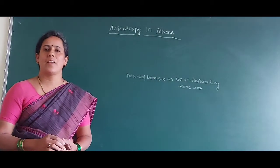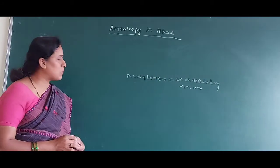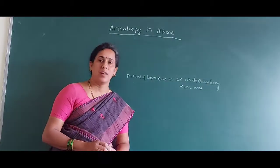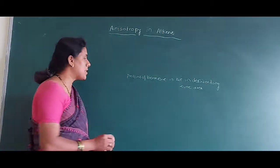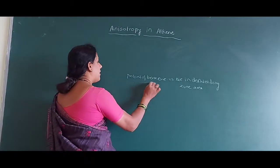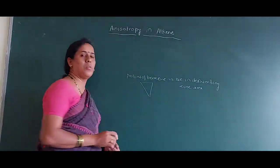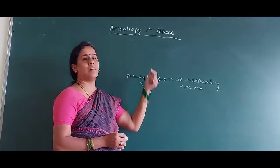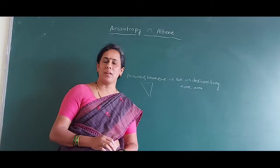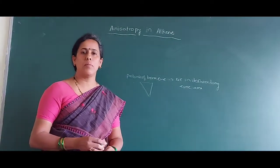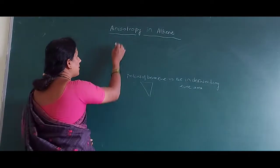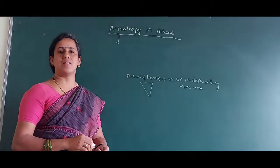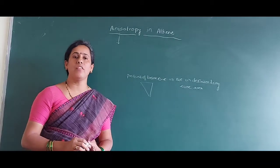There are two zones: the shielding zone and the deshielding zone. The deshielded zone is represented at the poles. In the same way, today we discuss anisotropy in alkenes. The meaning of anisotropy is the non-uniform nature of the magnetic field.